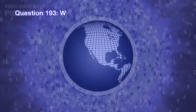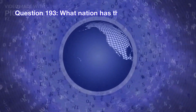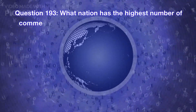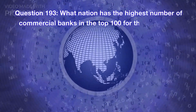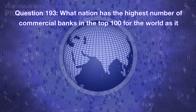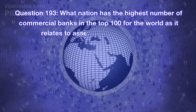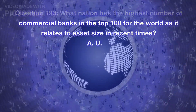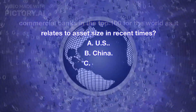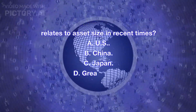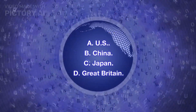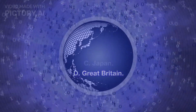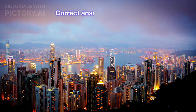Question 193. What nation has the highest number of commercial banks in the top 100 for the world as it relates to asset size in recent times? A. U.S. B. China. C. Japan. D. Great Britain. Correct answer is B. China.